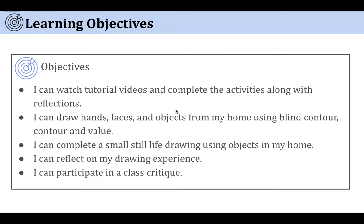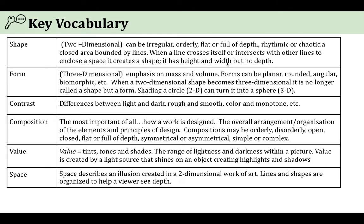In this process journal you'll watch tutorial videos and complete activities. You're going to be drawing hands, faces, and objects from home using blind contour, contour, and value. You'll set up a small still life from objects in your home, reflect on the experience overall, and participate in the critique at the end. We've got a lot of vocabulary with this one.